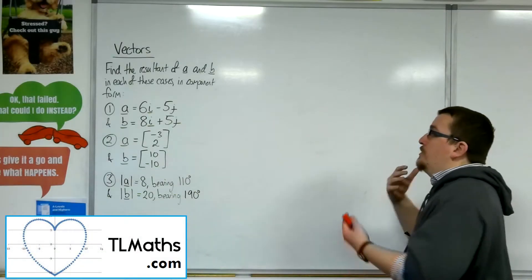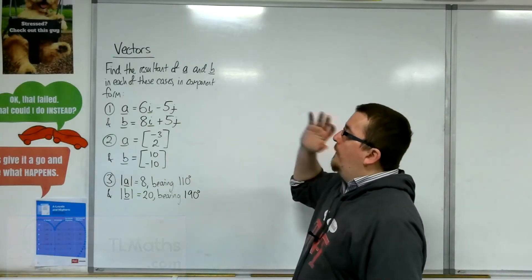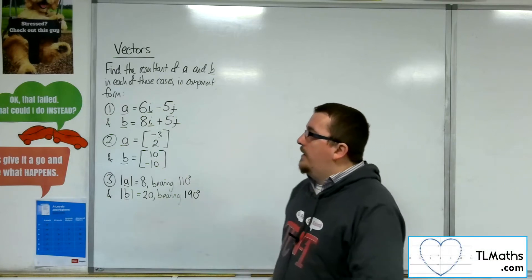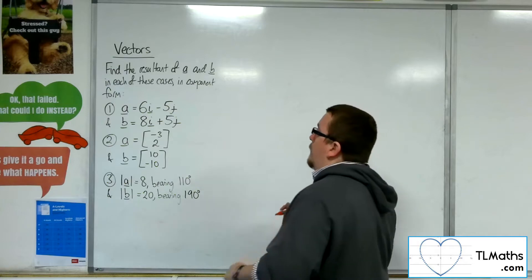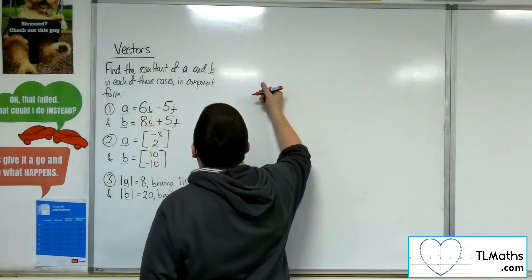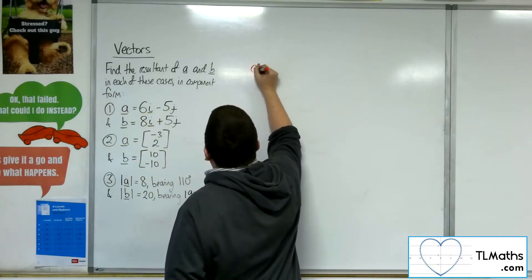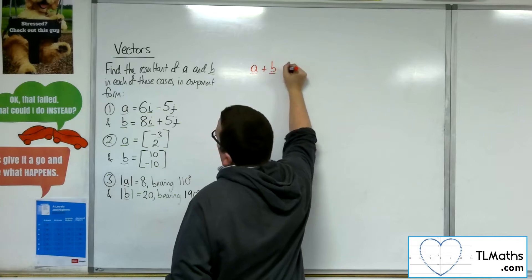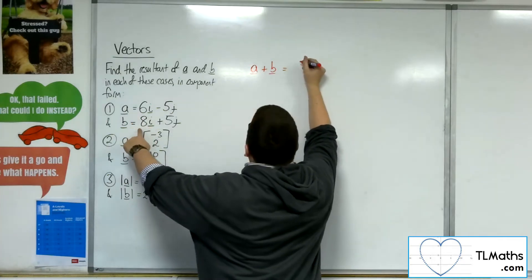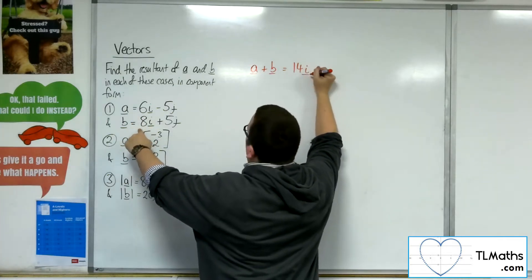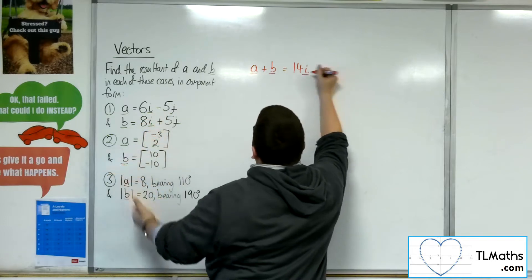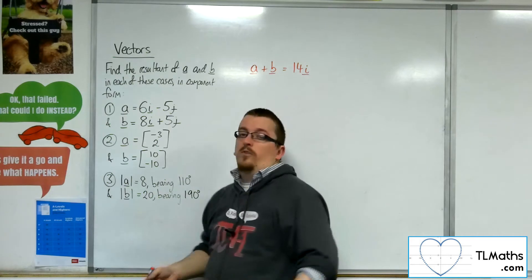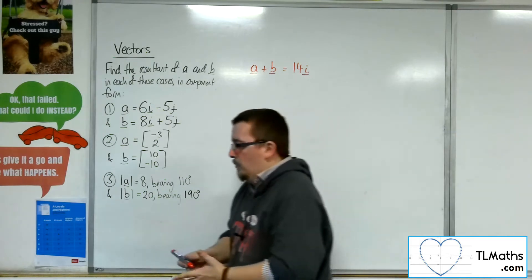Let's say I want to find the resultant vector of a and b in each of these cases in component form. The first one, we've got the two vectors given in component form. So a plus b will be equal to 6 plus 8, so 14i minus 5j plus 5j is 0j. So it would just be 14i, or 14i plus 0j if you wanted to.